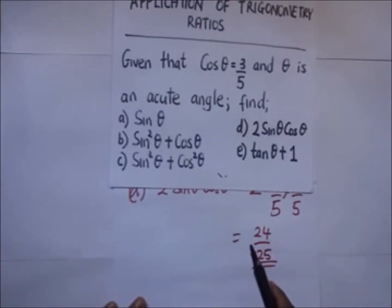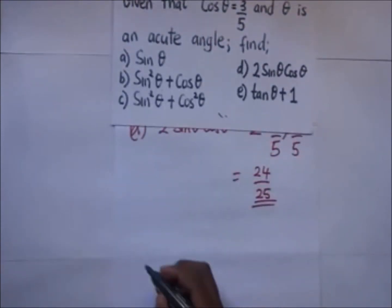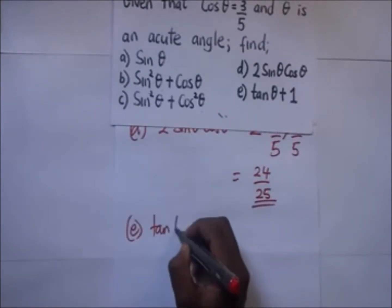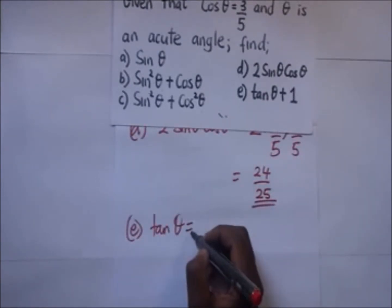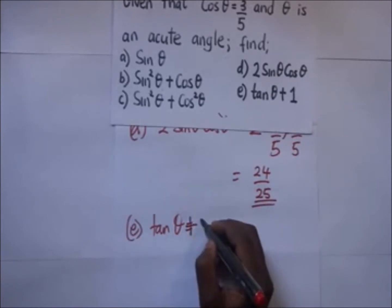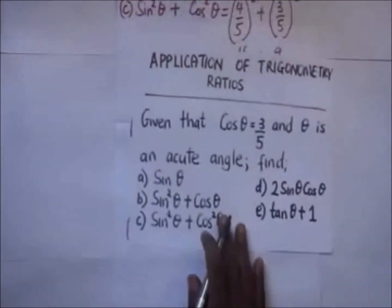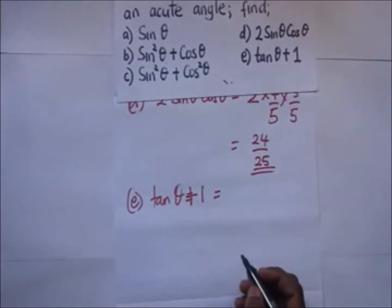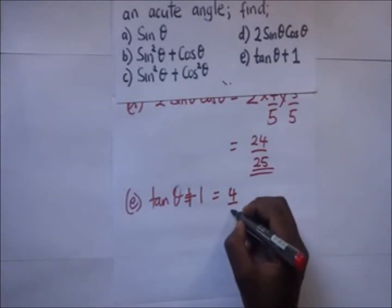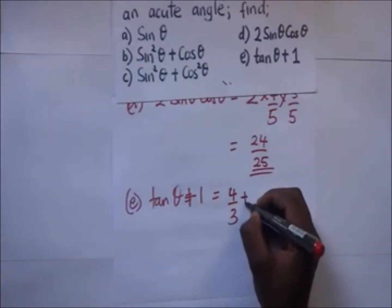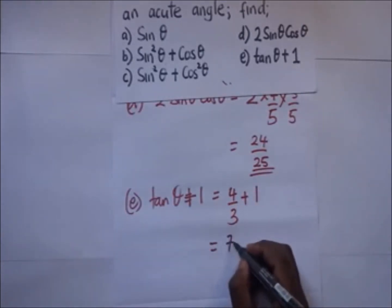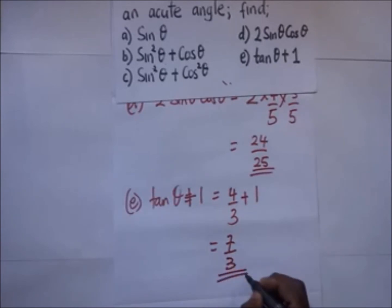Part e: tan theta plus one. Our tan theta is four over three, so this equals four over three plus one, which gives us seven over three. That is our answer for part e.